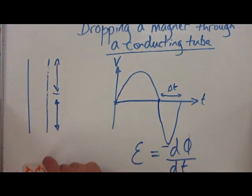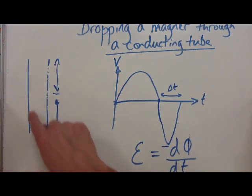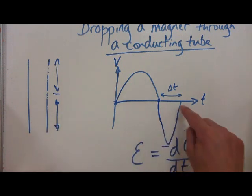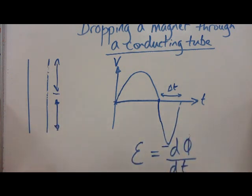Once it drops out the bottom, it continues on, and the magnetic field lines are no longer cutting the tube, so we go back to zero. And that is a classic dropping-a-magnet-through-a-conducting-tube question.